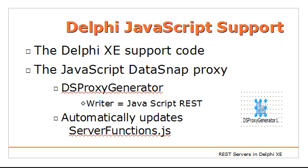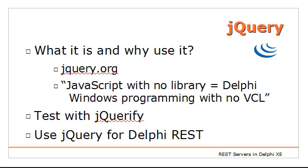For every method that you are exposing, it will generate an easy-to-use JavaScript client-side function. We could create everything in JavaScript manually, but for Delphi developers the analogy is that using JavaScript with no library is like programming Windows at the API level without using the Visual Component Library. It's possible, but it's slow, error-prone, and more complex than it should be. jQuery makes things really more fun and easier to work with. I'll show you how we can use jQuery to change the client-side code of a Delphi REST server.